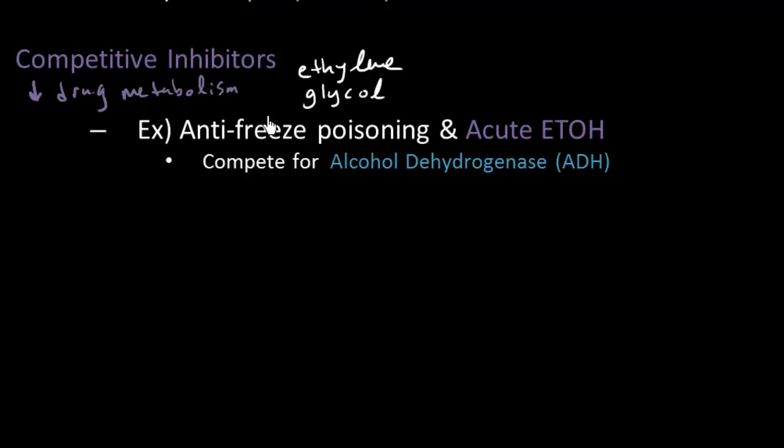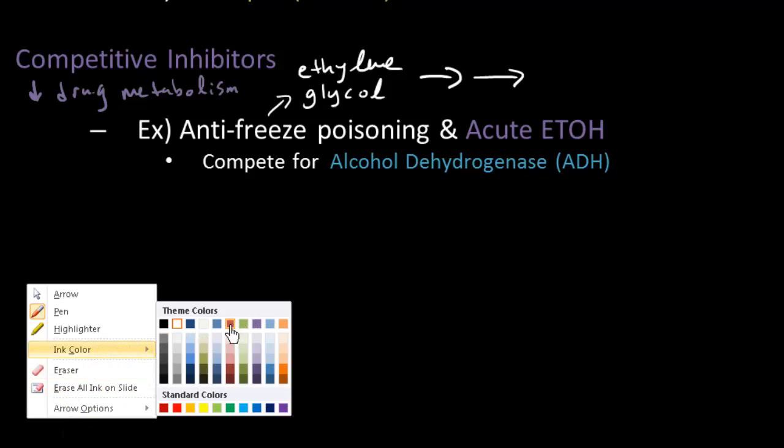Ethylene glycol, that is what antifreeze is. And so ethylene glycol, that main component in antifreeze, undergoes a two-step metabolic process and eventually forms something called oxalic acid.